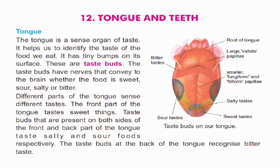The tongue is a sense organ of taste. It helps us to identify the taste of the food we eat. It has tiny bumps on its surface. These are taste buds. The taste buds have nerves that convey to the brain whether the food is sweet, sour, salty, or bitter.